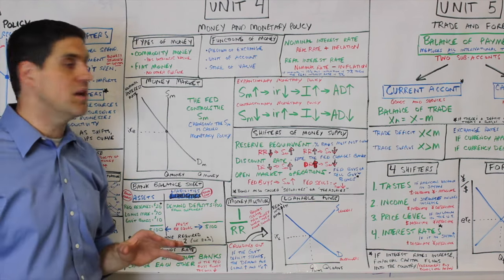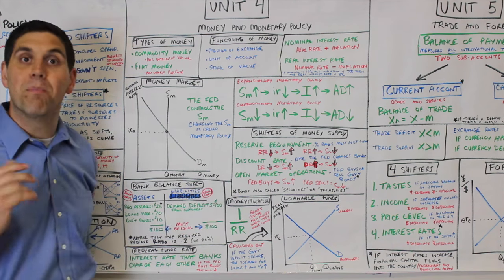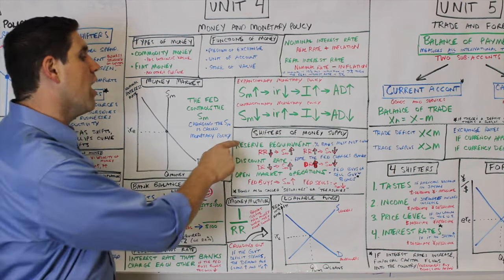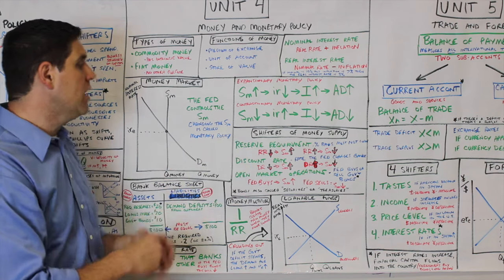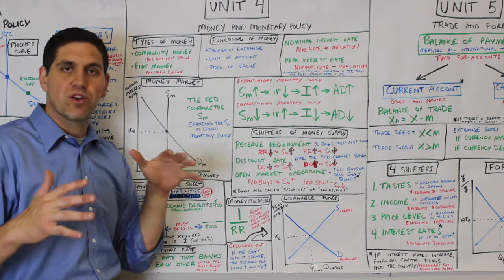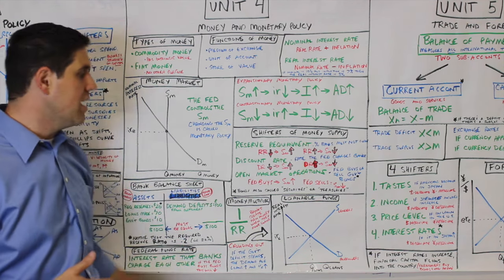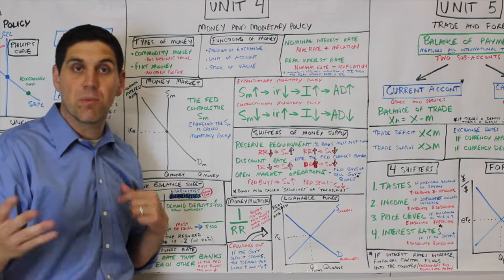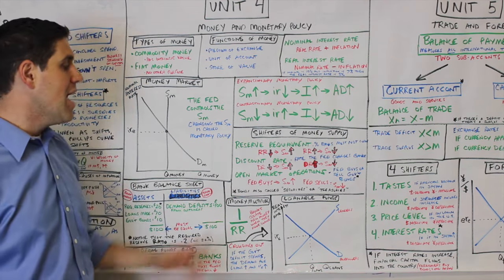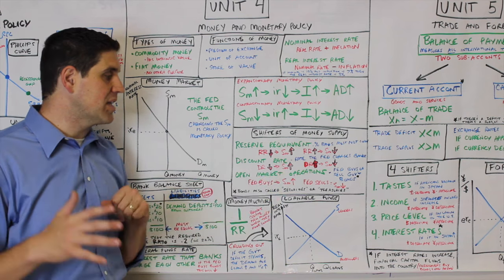There's three tools you absolutely need to know: the reserve requirement, discount rate, and open market operations. Open market operations is the most important one — it's the buying and selling of bonds, also called securities or T-bills. The reserve requirement is how much banks have to hold by law. If the Fed decreases the reserve requirement, that will increase money supply. If they increase the reserve requirement, banks have to hold more money and can't loan it out, so money supply decreases. The discount rate is how much the Fed charges banks to borrow money — they can lower it to increase money supply or raise it to decrease money supply. If the Fed buys bonds, it makes money supply bigger; if the Fed sells bonds, it makes money supply smaller.